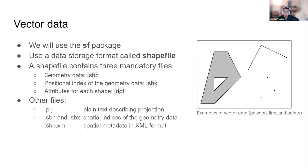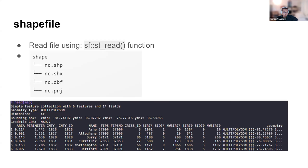The .dbf file contains the attributes for each of the shapes in the .shp file. These are the three mandatory files, but a shapefile can also contain other files — for example, .prj is a plain text file describing a projection. We'll discuss projections and coordinate reference systems later in this chapter. The shapefile can be read using the st_read() function from the sf package.